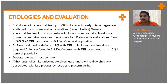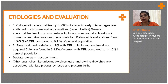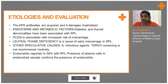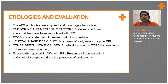Structural uterine defects: 19 percent with RPL. It includes congenital and acquired defects. Congenital uterine anomalies (CUA) are found in 8 to 12 percent of women with RPL, compared to 1 to 1.5 percent in the general population. Septate uterus is the most common abnormality seen in anatomical defects of the uterus. Other anomalies like unicornuate, bicornuate, and uterine didelphys are associated with late pregnancy losses and preterm birth mainly. Septate uterus causes miscarriage before 20 weeks, while other defects usually cause preterm delivery.